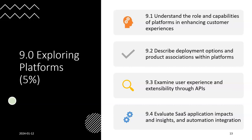The ninth domain, worth five percent, is Exploring Platforms. Engineers need to understand the role and capabilities of platforms in enhancing customer experience — happy customers generate more revenue. They must describe deployment options for hardware and software within platforms, noting that Cisco mostly deals with software rather than hardware. They also need to examine user experience and extensibility through APIs — how application programming interfaces extend usage across different environments.